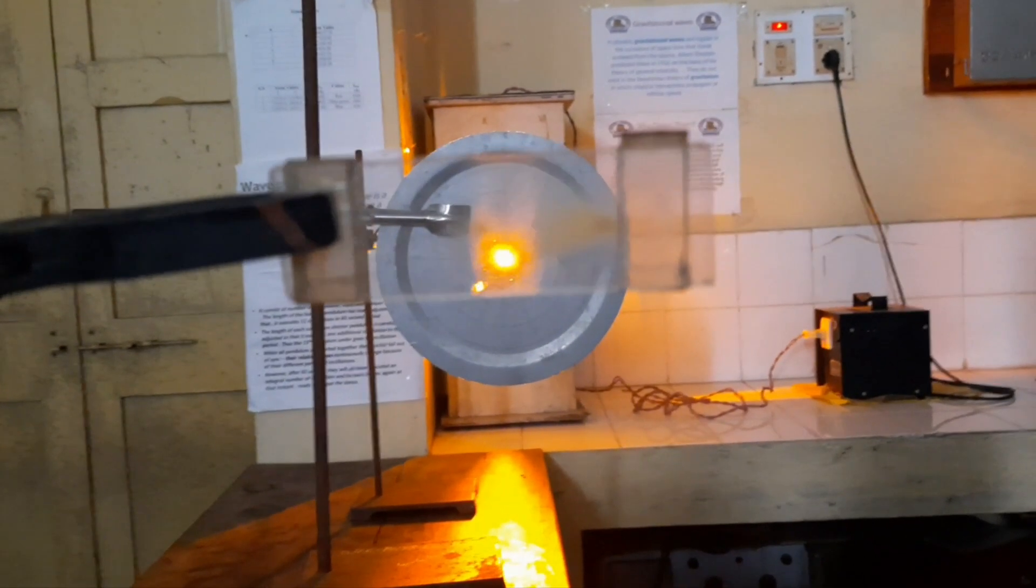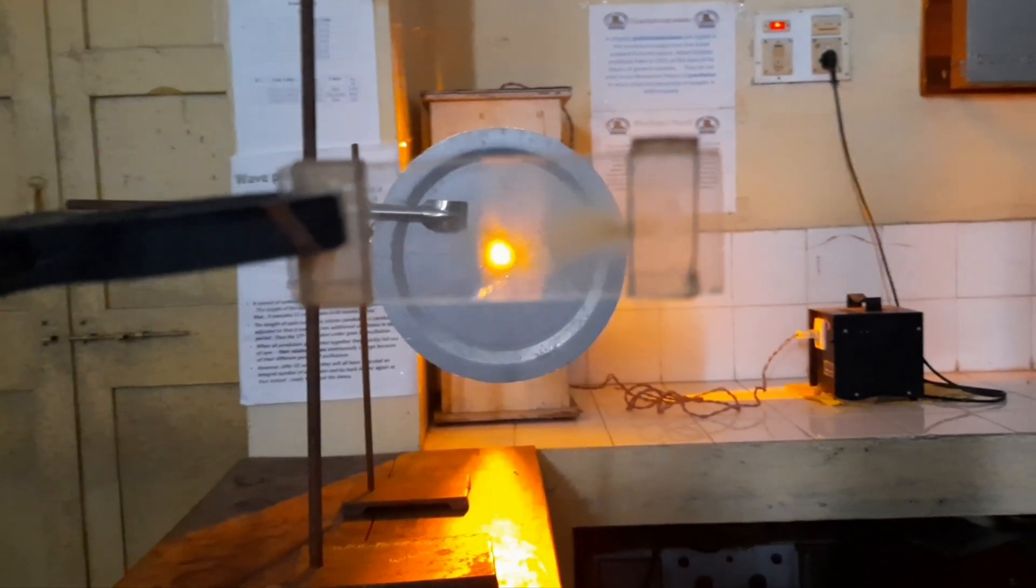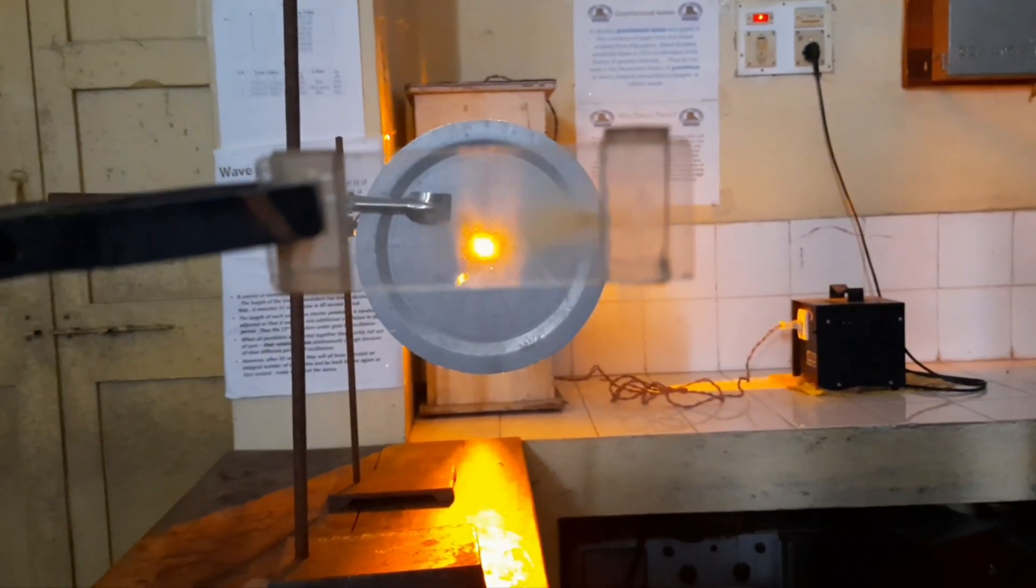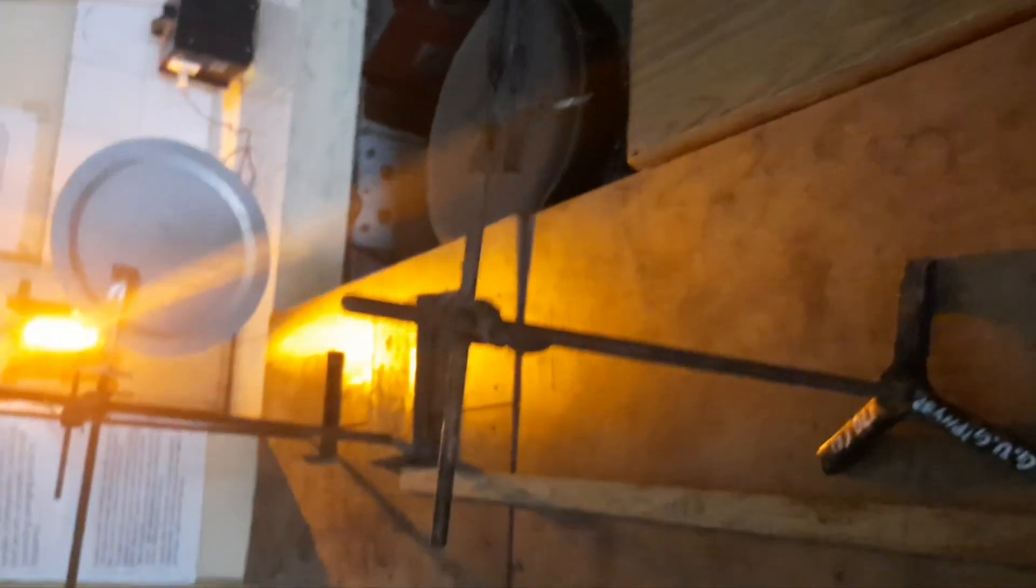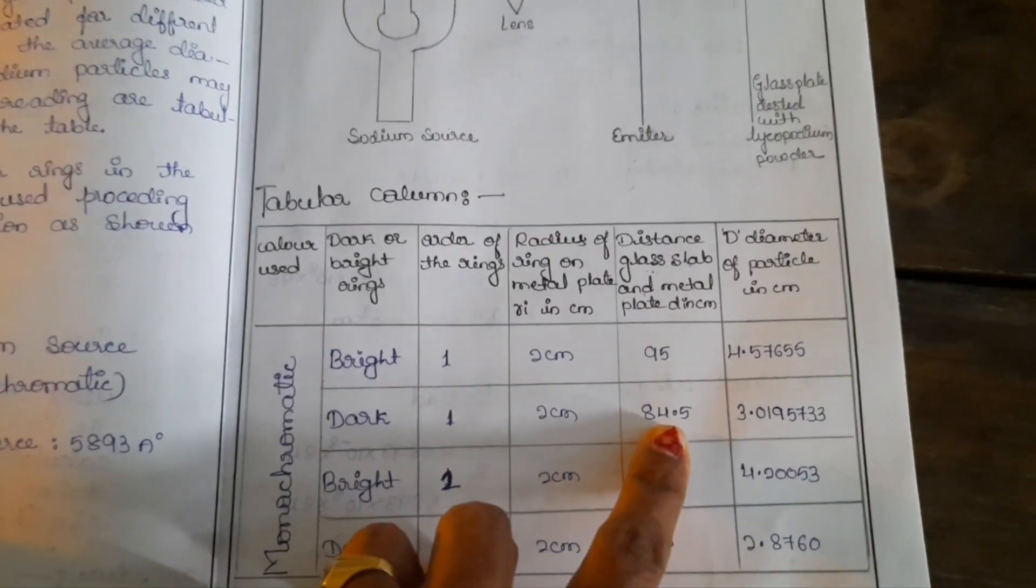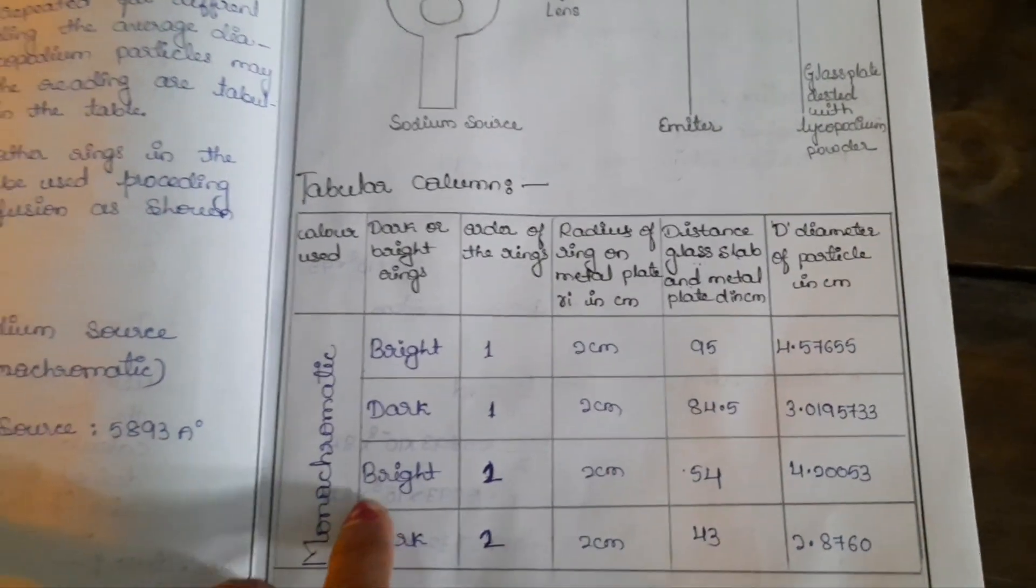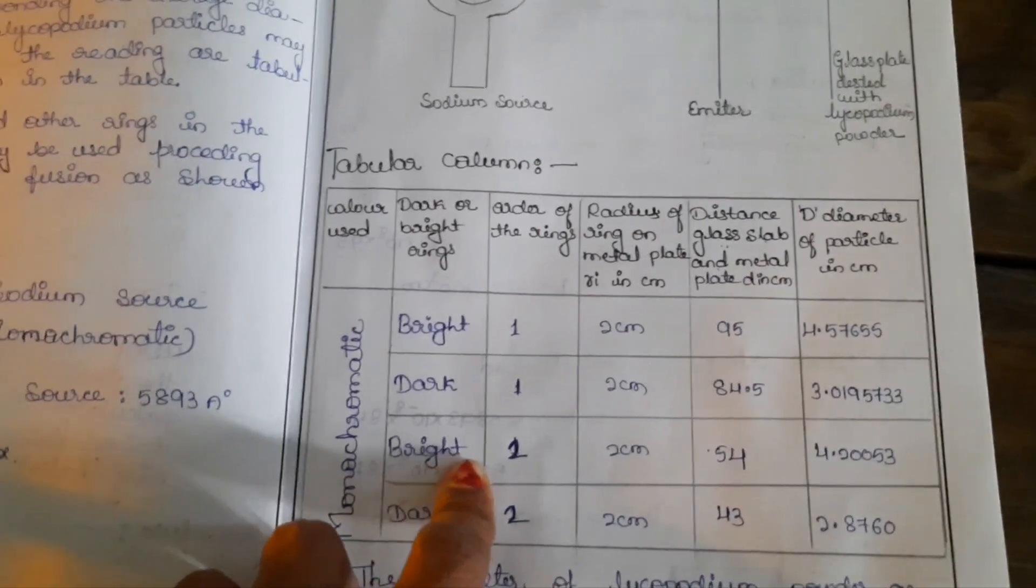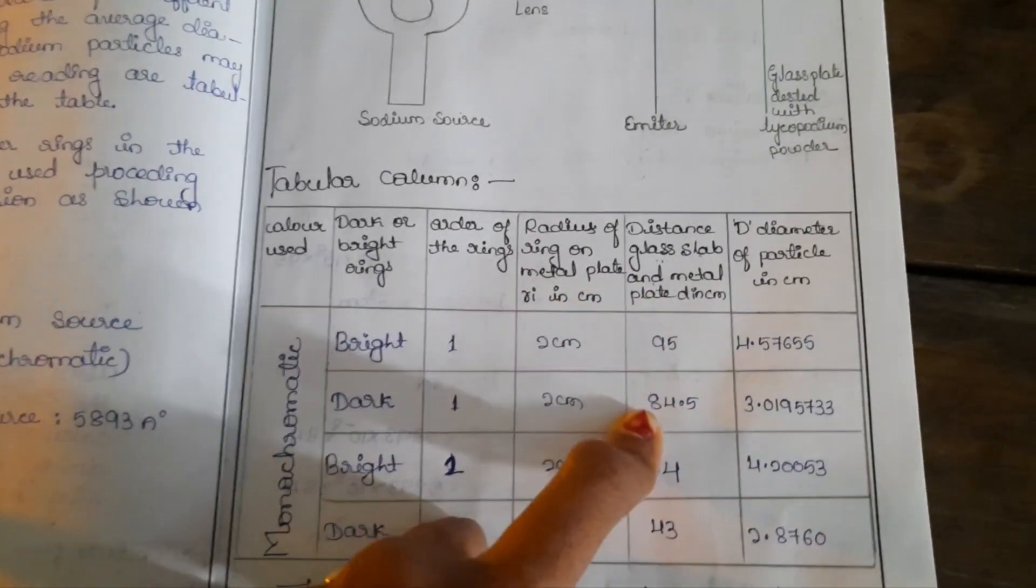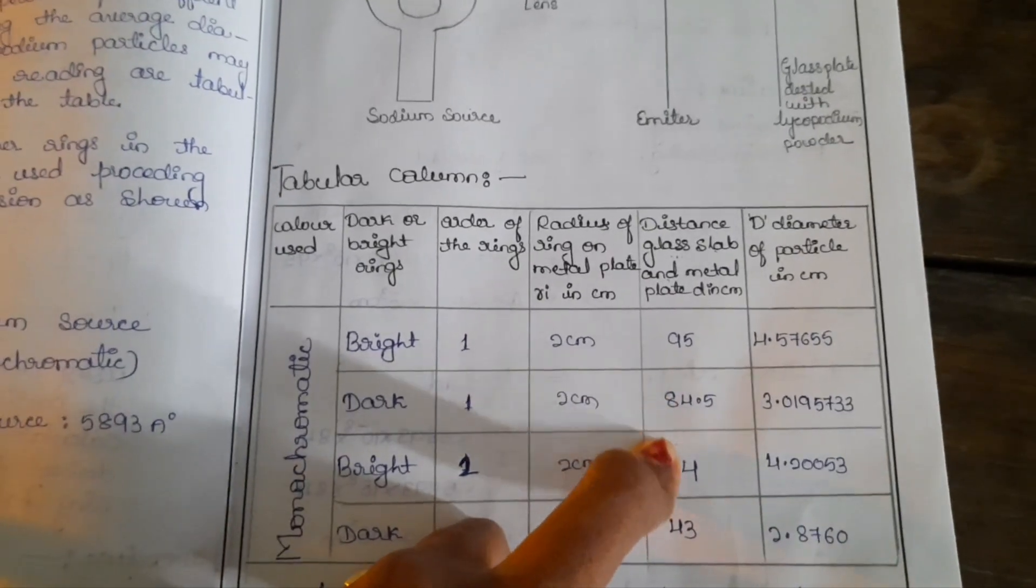Then you can note the distance between the array disc and this stand. So first dark, after adjusting to 2 centimeter, they got 84.5. Like that, repeat the same procedure for second bright and second dark and note the distance between glass plate and array disc.